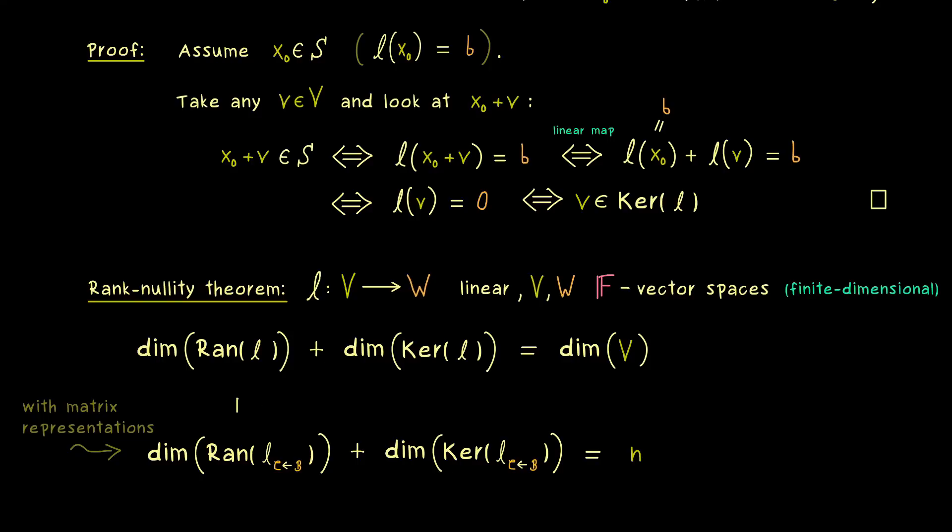And now, if you recall part 28 and part 29 of this series, then you know that these dimensions here don't depend on the chosen matrix representation. This means if you change the matrix representation, you cannot change these dimensions here. And exactly this proves the rank-nullity theorem in this general setting as well.